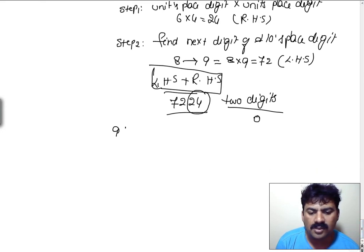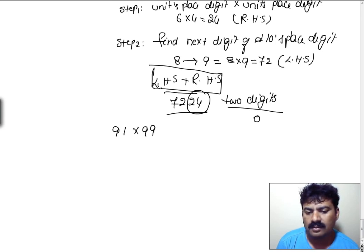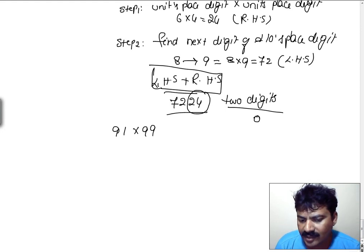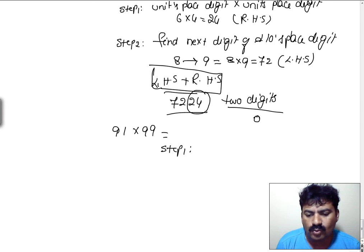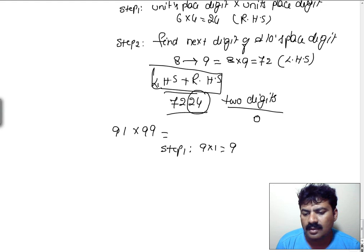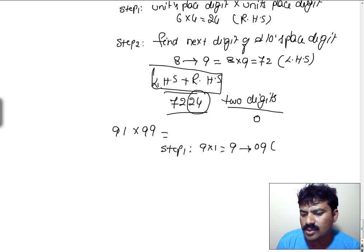Let us take another example to explain that situation: 91 into 99. In step 1, we find 9 into 1, which becomes 9. But is it 2 digits? It is a single digit only. Then it must be written as 09, which is going to be the RHS part.